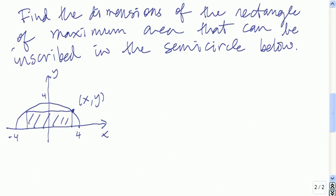Here's a problem for you to try. We want to find the dimensions of the rectangle of maximum area that can be inscribed in this semicircle. The first thing we want to do is assign variables to the unknowns. x, since it's a point on the semicircle and the upper right corner of the rectangle, is this horizontal distance. y, since it's the y-coordinate of the upper right corner, is this vertical distance. Finally, we're going to let a be the area.